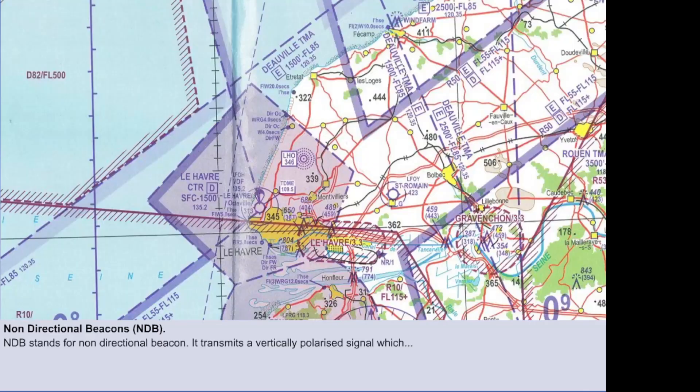We'll start with the most simple, the NDB, which stands for non-directional beacon. This beacon emits a vertically polarized signal in all directions, which says simply, I'm over here. It gives no more information than that in its basic form.